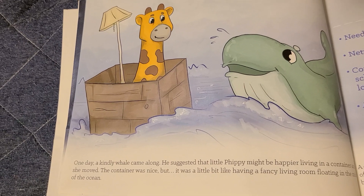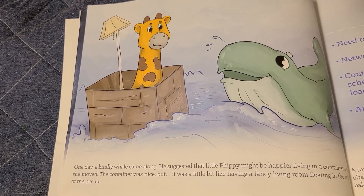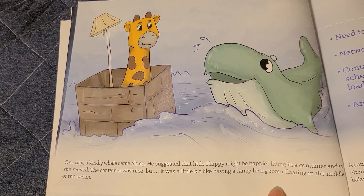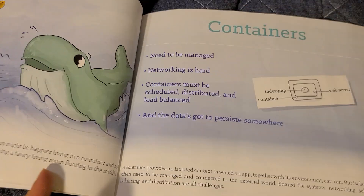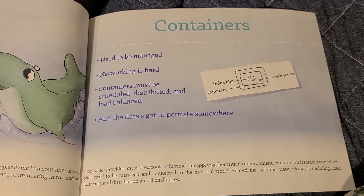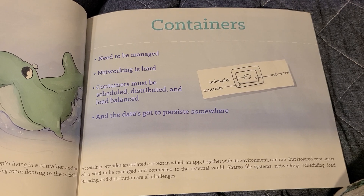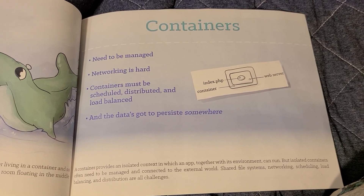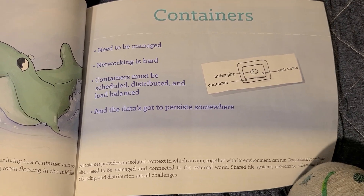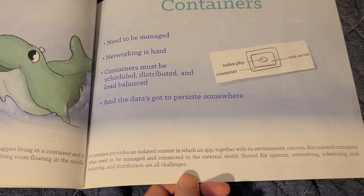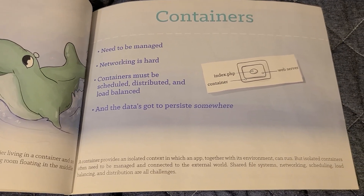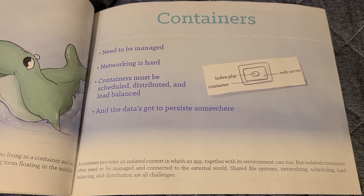One day, a kindly whale came along. He suggested that little Pippi might be happier living in a container, and so she moved. The container was nice, but it was a bit like having a fancy living room floating in the middle of the ocean. Containers need to be managed. Networking is hard. Containers must be scheduled, distributed, and load balanced, and the data has got to persist somewhere. A container provides an isolated context in which an app, together with its environment, can run. But isolated containers often need to be managed and connected to the external world — shared file systems, networking, scheduling, load balancing, and distribution are all challenges.